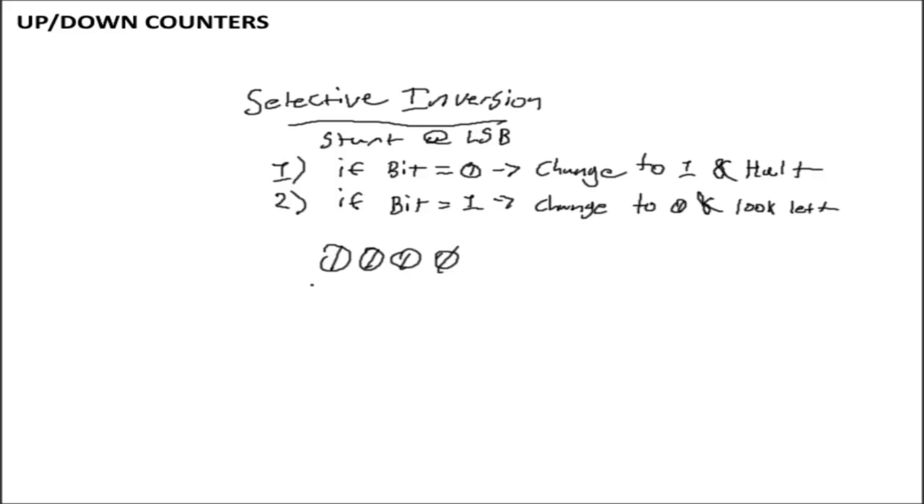For example, if I have the bit sequence 0000, I would start at the least significant bit. The bit is equal to zero, so we follow rule one. That changes it to one and then halts. So that bit remains the same, that bit remains the same, that bit remains the same, and that one changes to one.